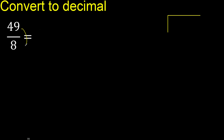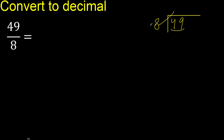49 divided by 8. 4 is less, therefore next 9. 49 is not less, therefore with 49: 8 multiplied by which number is nearest to 49 but not greater? 8 multiplied by 7 is 56, which is greater. 8 multiplied by 6 is 48, which is not greater. 49 minus 48 is 1.